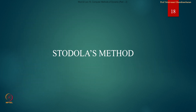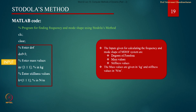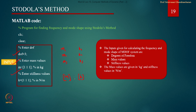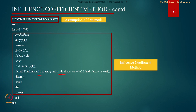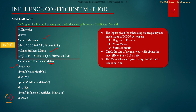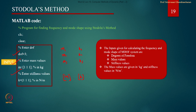The next is the Stodla method, which we also solved a problem for in the last lecture. We maintain the same degrees of freedom, mass values, and stiffness values. Please note that in this method the entire mass matrix and stiffness matrix need not be given — you only need to give the values of M1, M2, M3 and K1, K2, K3, not the full matrices.